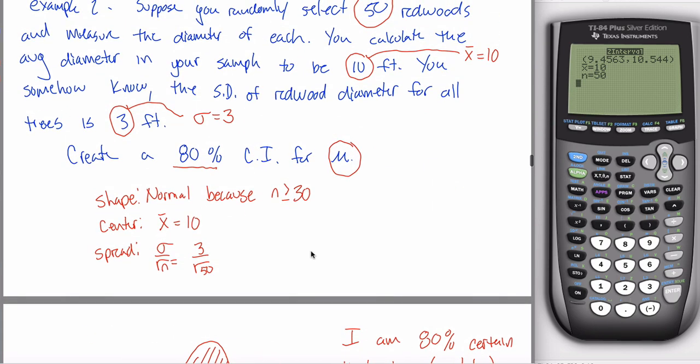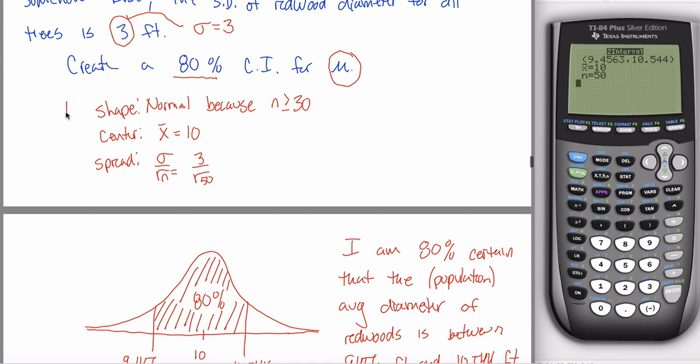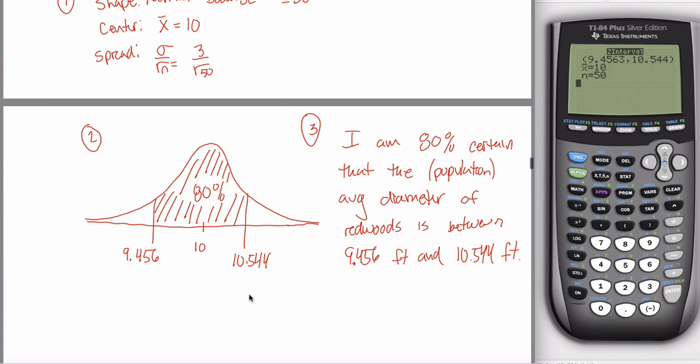Every single time I give you a confidence interval question, I'm going to ask you for at least steps one, two, and three. Turns out there's an optional fourth step that I could tack on at the end. I'm not going to do that in this video because it takes a while and it deserves its own video. But just FYI, on your quiz this week, there's a part four. And on the next video, you'll learn how to do part four.